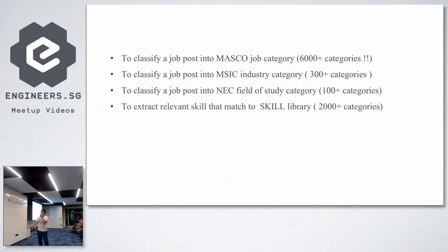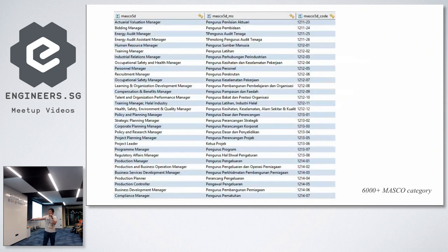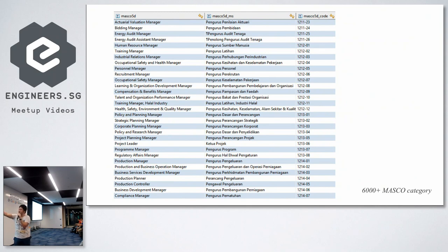Looking at the breakdown from our stakeholder definitions: for MASCO job category we have six thousand categories, for MSIC we have three thousand. Most classifiers handle 100 to 200 categories, but MASCO has six thousand — has anyone here classified six thousand categories? These are sample job role lists that a job post needs to be matched to, with quite dedicated and specific job roles for each.